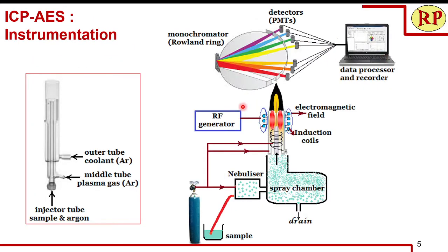In the instrumentation, we have an argon cylinder and a sample. The sample enters the nebulizer along with the argon gas and gets converted to the aerosol mist. This enters the spray chamber where fine particles along with argon gas enter the center tube of the plasma torch, while heavy or larger particles are drained at the bottom.